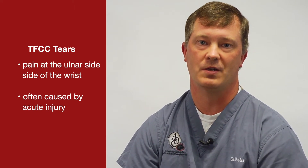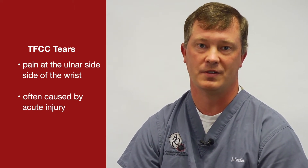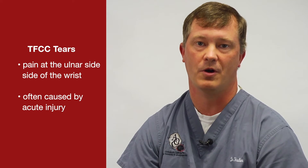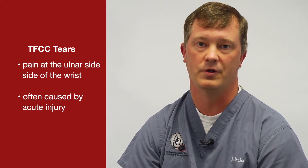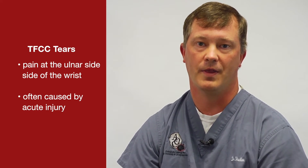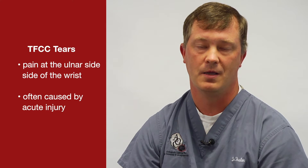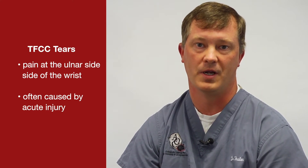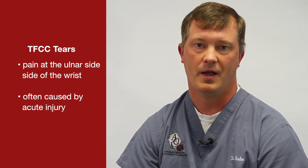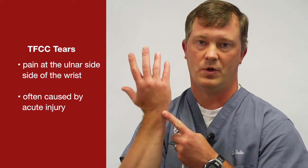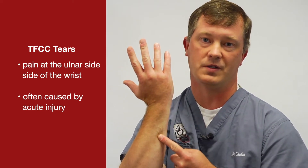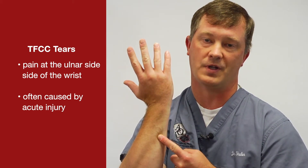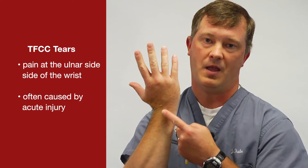I typically explain it similar to a meniscus tear — you've probably heard of that with regards to the hunk of cartilage that is a shock absorber in the knee. This is the equivalent of a meniscus tear, but in the wrist. It's a shock absorber between your ulna, which is the bone that runs down the small finger side of the forearm, and one of your carpal bones named your lunate.